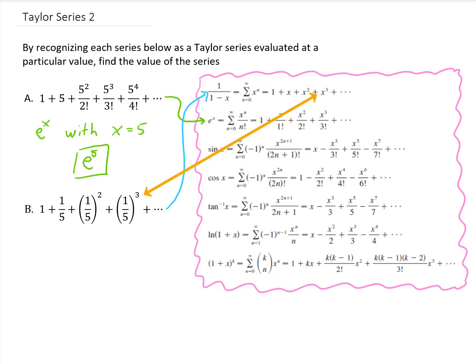So this given series is just a series for 1 over 1 minus x, but instead of x plugged in to the series, we're plugging in x equals 1 fifth. So our answer to this problem is that this series is going to sum up to 1 over 1 minus 1 fifth.